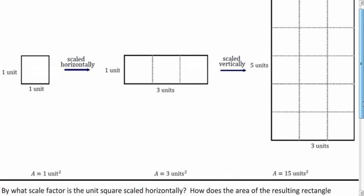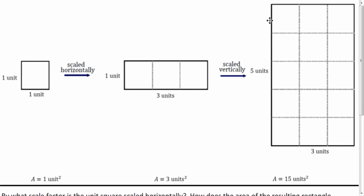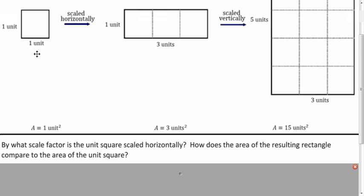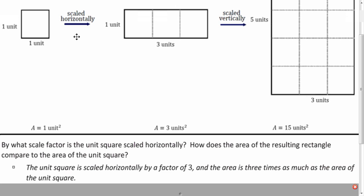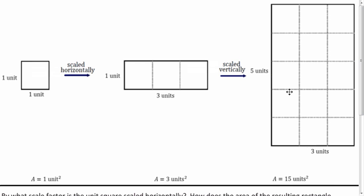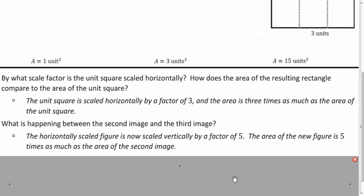Let's look at this example. We're scaling this unit square horizontally, and then we're scaling this new rectangle vertically. What do you notice is going on here? Let's look at each part. What's the scale factor for the horizontal scale, and how do the areas compare? So the scale factor for the horizontal scale was 3, right? It went from 1 to 3 units. And the area, this one's 3 square units. This one's 1 square unit, so it was 3 times as large. Okay, that makes sense. It's a linear scale. But now the question is, what's happening from the second image to the third image? So describe what's going on from this rectangle to this rectangle. So now we scaled up vertically by a factor of 5. If we look at the area of the new figure, that's 15, and that's 5 times the previous area, which was 3.